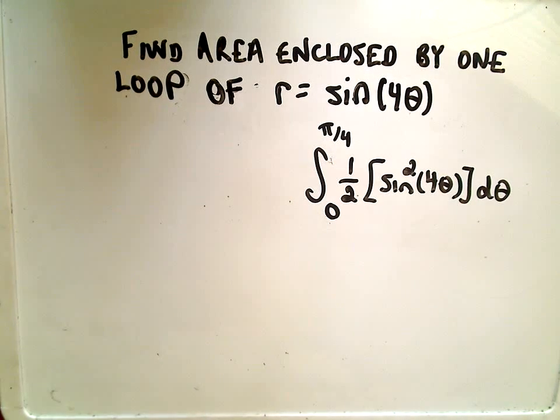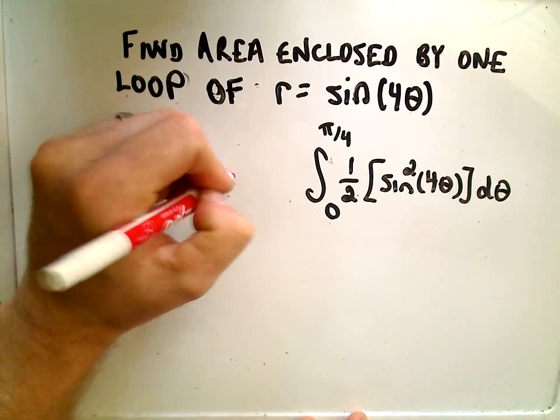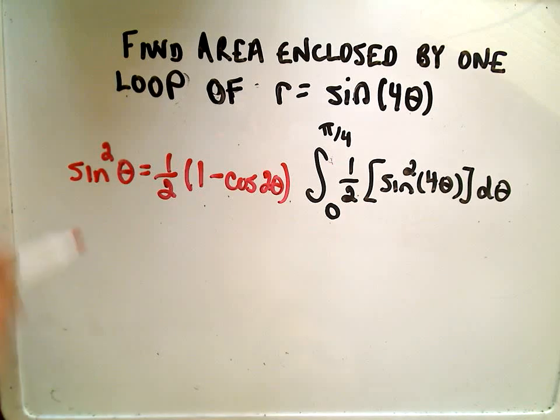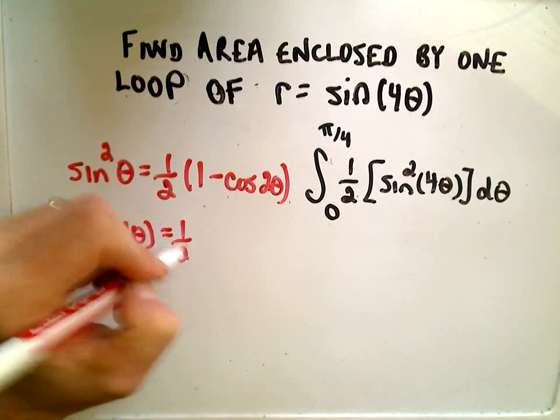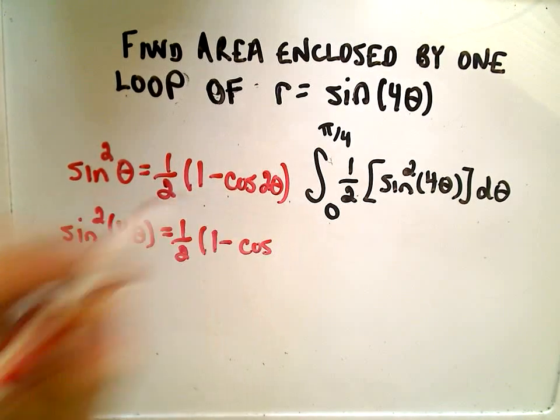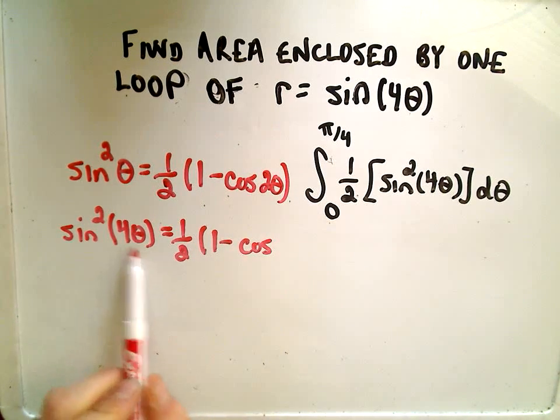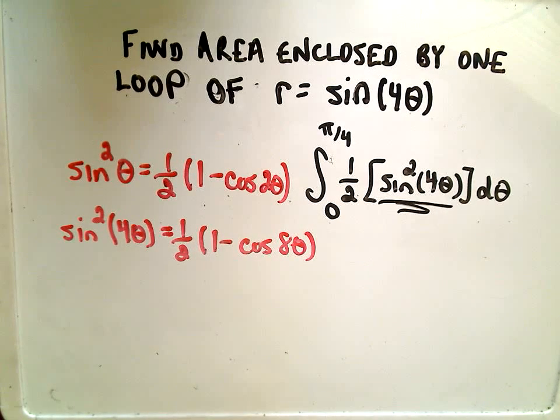We're going to have to use one little identity here. Remember, there's an identity that says sine squared of theta equals one-half one minus cosine of two theta. So to integrate sine squared four theta, I can write sine squared of four times theta. That's going to be one-half of one minus cosine of, notice it says whatever theta is on the left, you double it on the right. We have four theta here, so I'm going to get eight theta here. So this is the identity I'm going to use on the sine squared of four theta part to break it up.